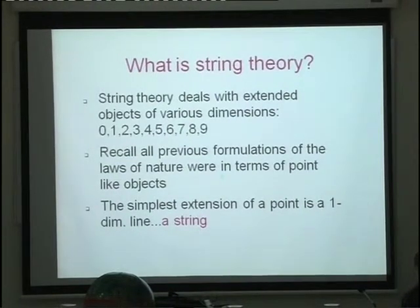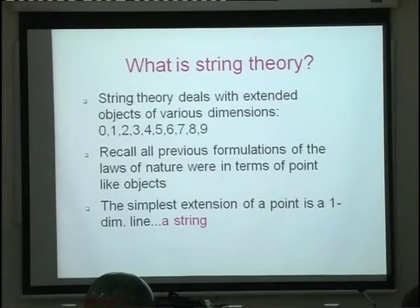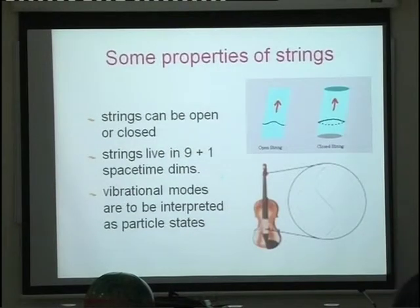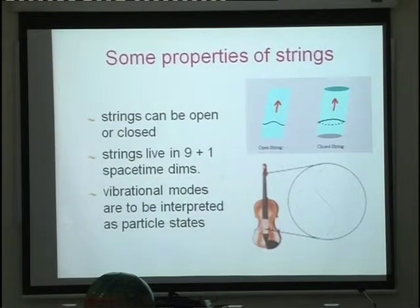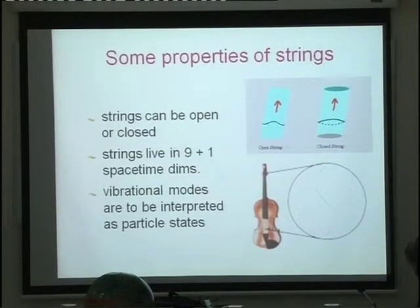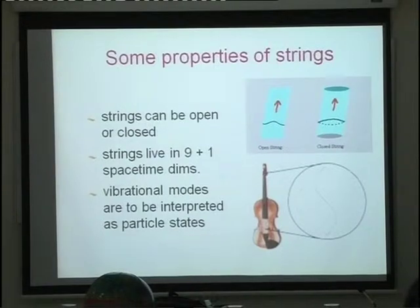The simplest building block is the one-dimensional object called the string — so it's a misnomer to call it string theory since that only refers to one aspect of it, but the name stuck. For a one-dimensional object there can be only two behaviors: it can be either open or closed. You're all familiar with strings in daily life — it's like a violin string you pluck, and you have harmonics, modes of the string.